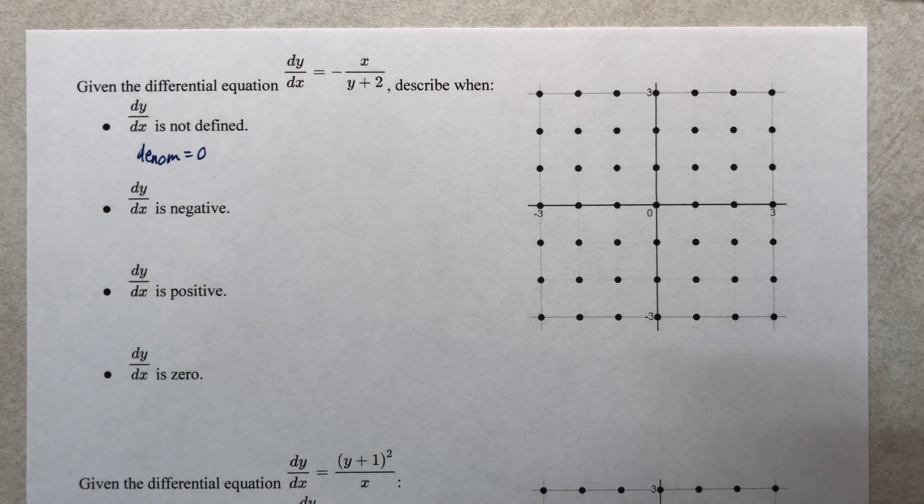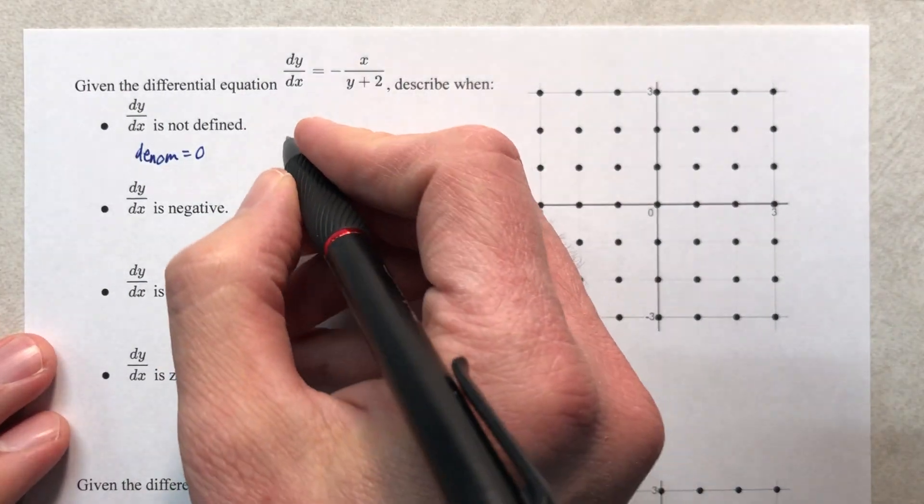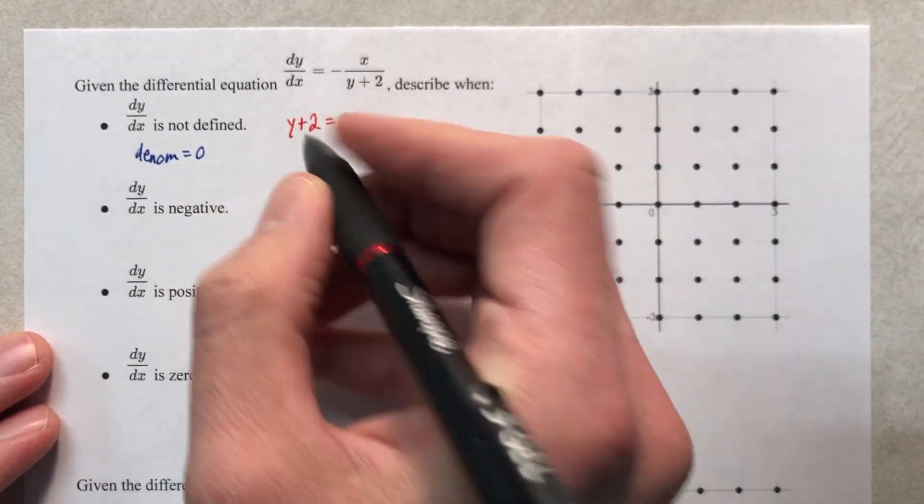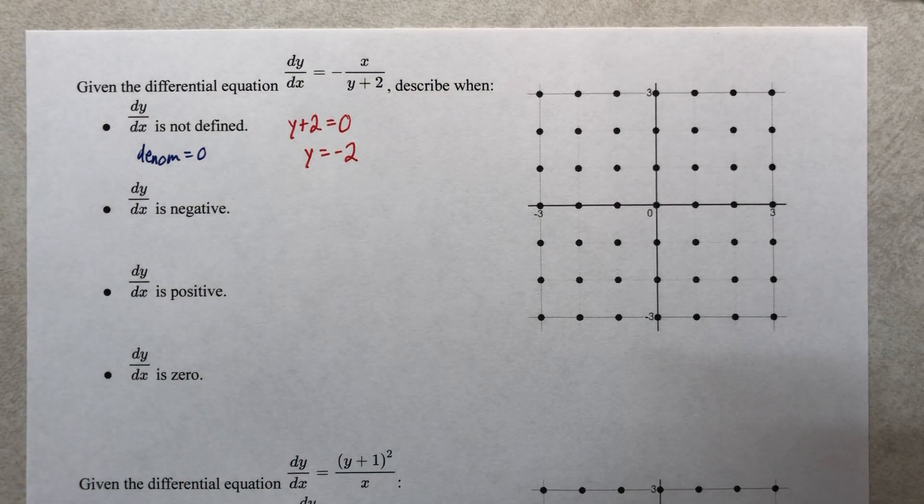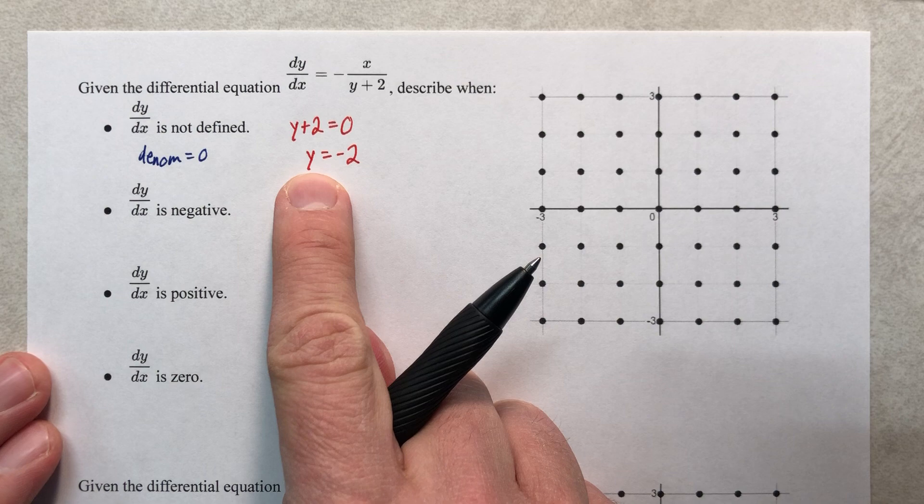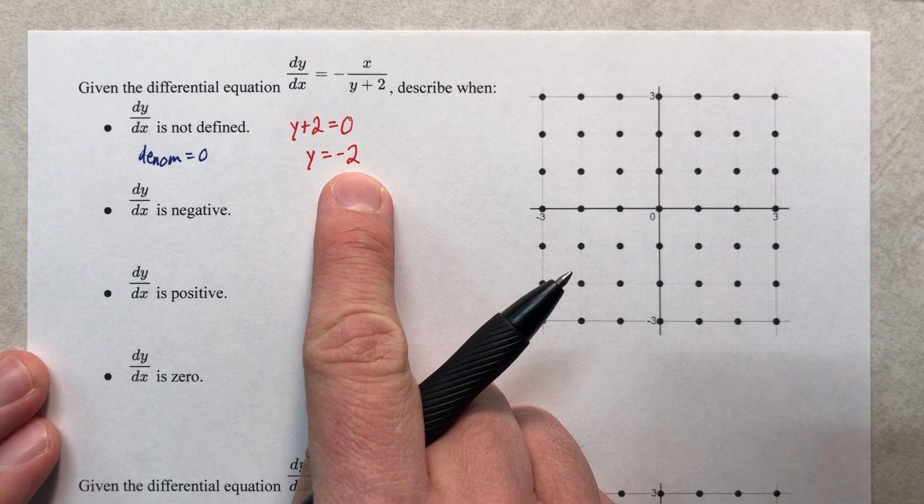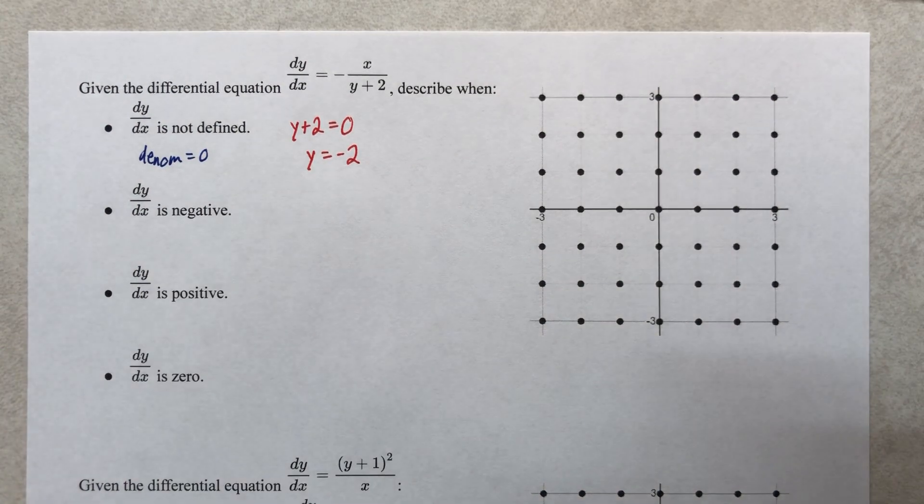Okay, so if the denominator is equal to zero, that means that y plus two equals zero, which means y equals negative two. So anytime we have a y value of negative two, we're going to have an undefined slope.